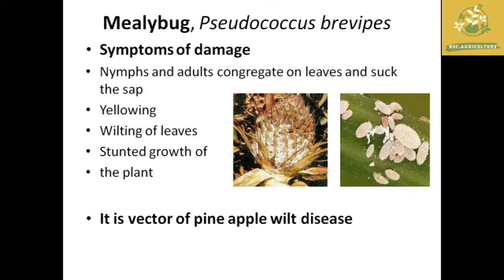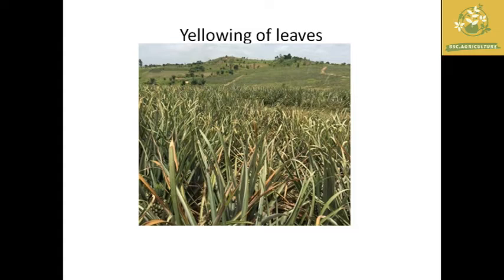Mealybug damage reduces the yield, and in the most severe cases the whole plant becomes stunted and withered, resulting in loss of the plant in that particular field. Importantly, mealybug also acts as a vector for pineapple wilt disease, which is a significant disease present in pineapples.